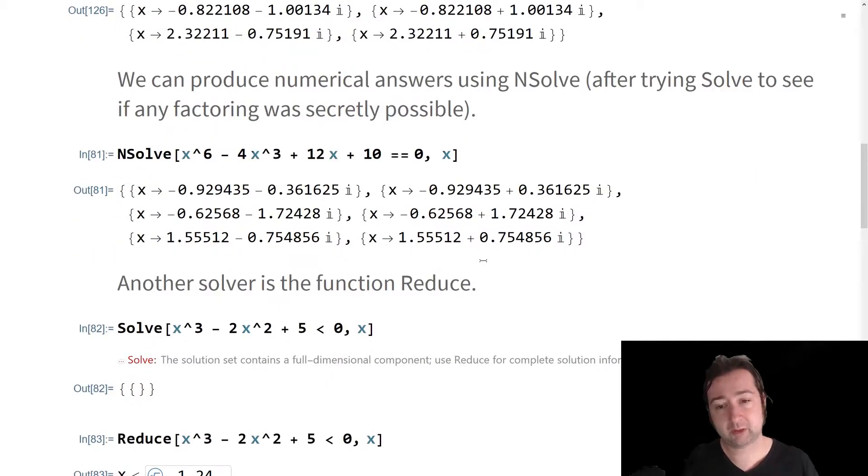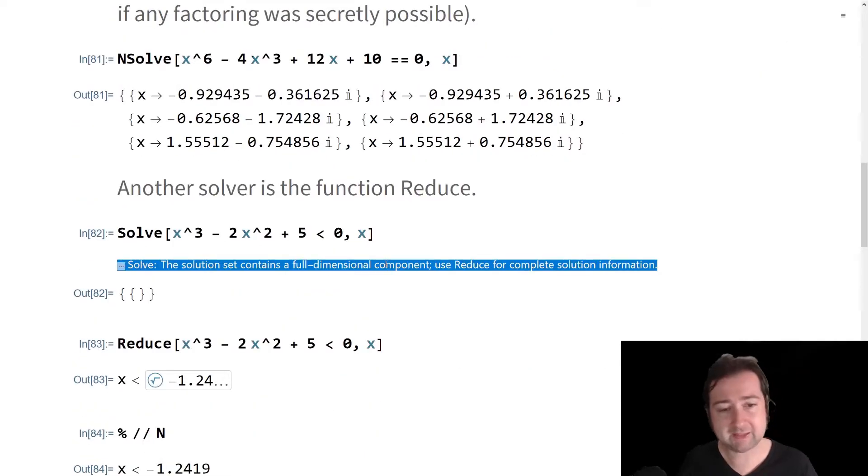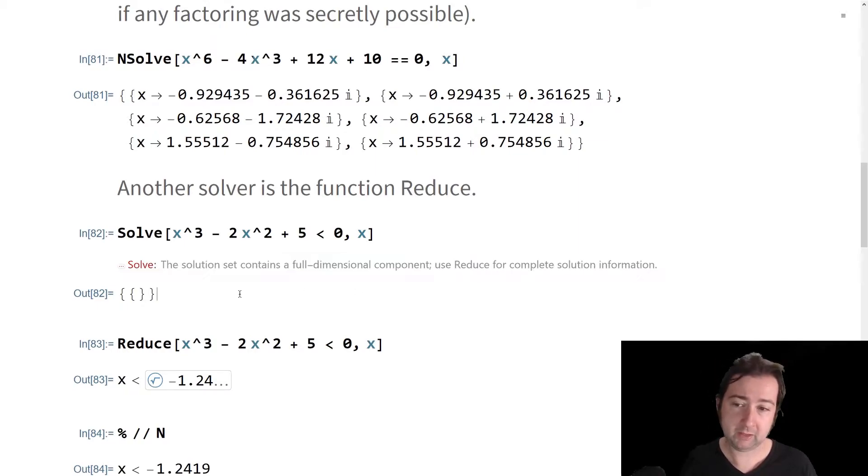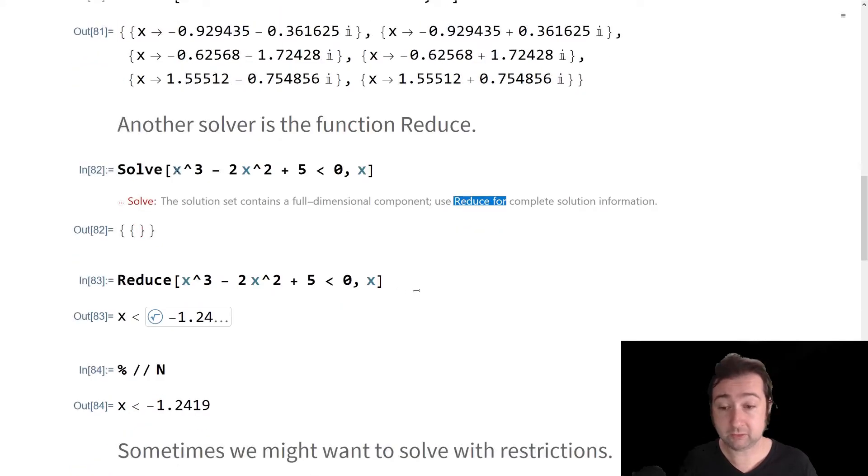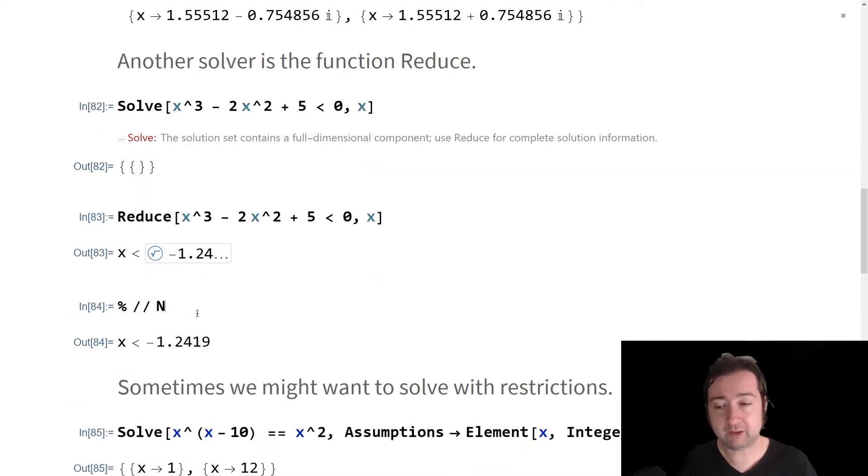Another solver that you might have to use sometimes is the function Reduce. That will happen in cases where you have an inequality, and the problem can't be solved with a polynomial method. This is not uncommon for Solve to tell you when you need to apply Reduce to a problem. If you try to naively use Solve to solve the inequality x to the third minus 2x squared plus 5 is less than zero, Solve is going to tell you use Reduce instead. If you use Reduce, we get another one of these root expressions. You can feed that into the numerical evaluator and you'll get out the inequality that you were after.